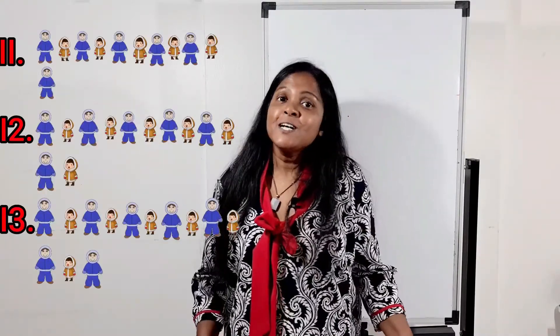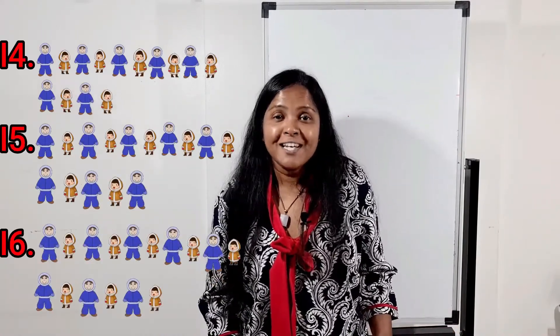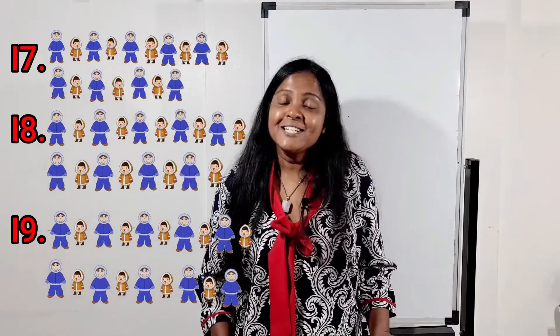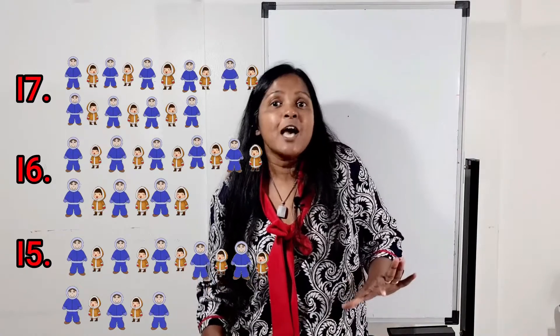We will sing forward counting song and backward counting song together. Are you ready? Twenty little Eskimos, boys and girls. Twenty little, nineteen little, eighteen little Eskimos. Seventeen little, sixteen little, fifteen little Eskimos. Fourteen little, thirteen little, twelve little Eskimos. Eleven little Eskimos, boys and girls.